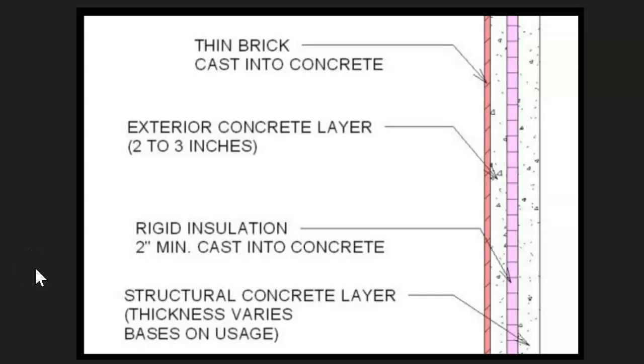The next one is something you'll see very commonly here. And this is called the tilt up concrete. Let's look at the construction. It has a thin brick cast into the concrete fascia on it. And then it has an exterior concrete layer that's two or three inches. So this is just a covering over this outer layer. Then you have rigid insulation in the middle. And then you have the structural concrete in the back. And again, this is going to vary based on its use. If it's supporting two stories or one story, obviously the higher up you go, the more rigid it has to be. So it's going to have to be thicker and have more reinforcement.